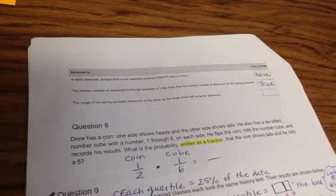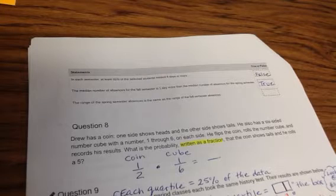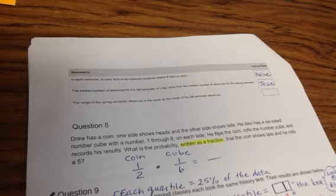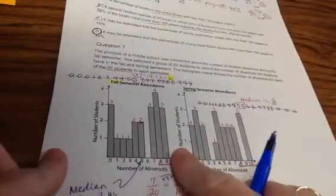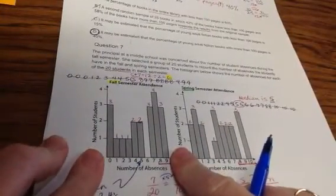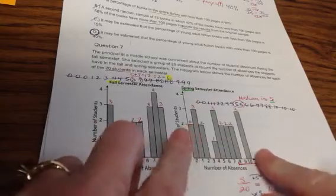Part 3. The range of the spring semester absences is the same as the range of the fall semester absences. The range here is from 9 down to 0, and the range here is from 10 down to 0. So that's false. Our final is false, true, false.